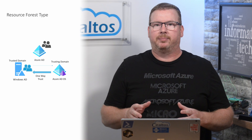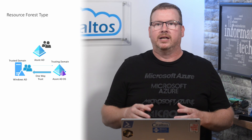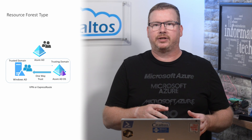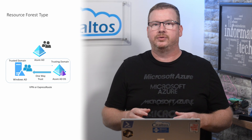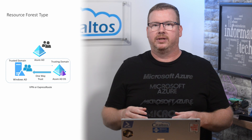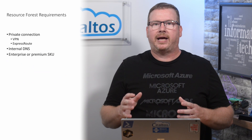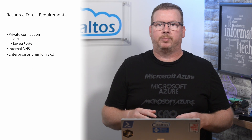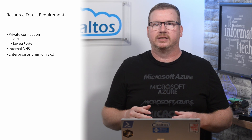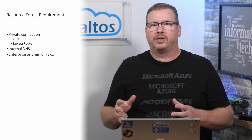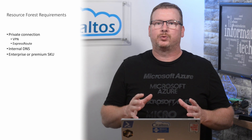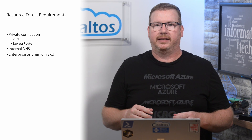There are a couple of things that need to be in place for this to work. There needs to be a private connection between Azure AD Domain Services and the Windows domain, either using VPN or ExpressRoute. Internal DNS also has to be in place for both domains to locate cross-domain resources. Additionally, an Enterprise or Premium Azure AD Domain Services SKU is required to use a resource domain.